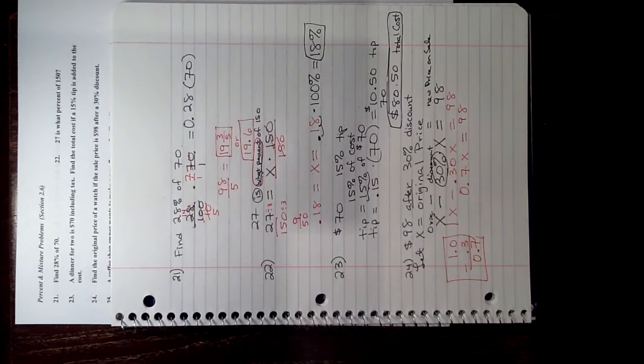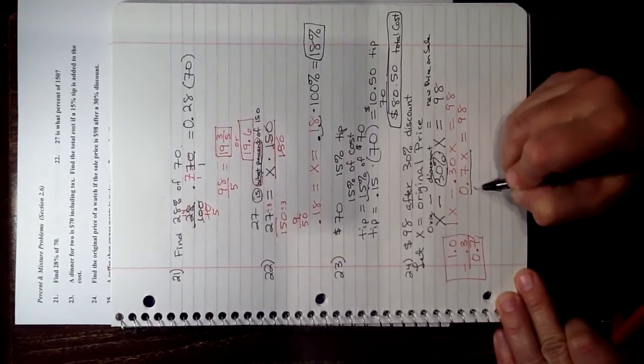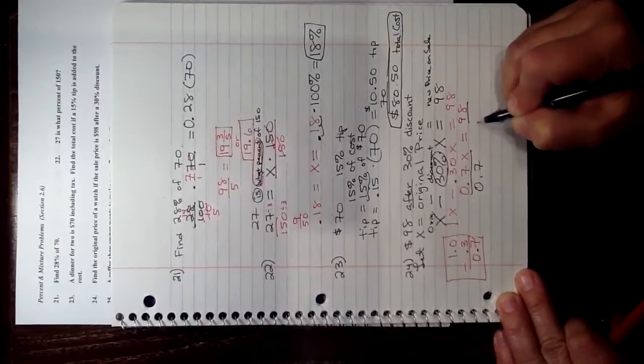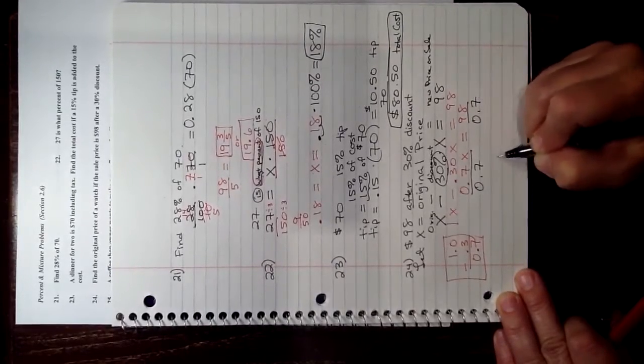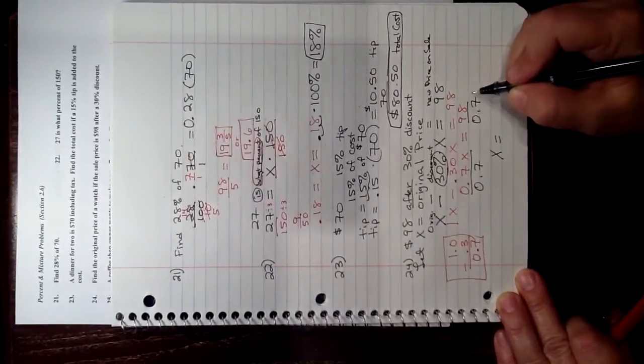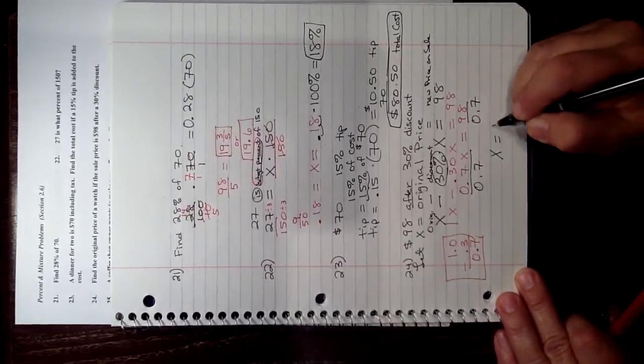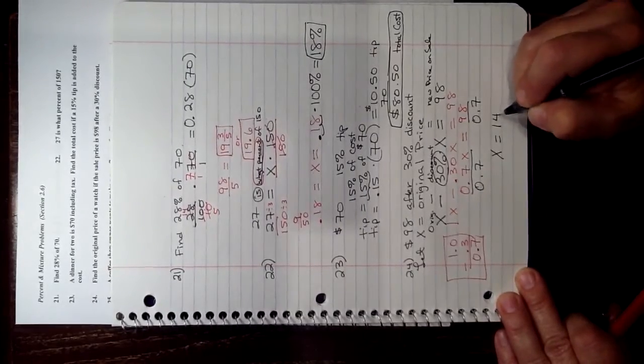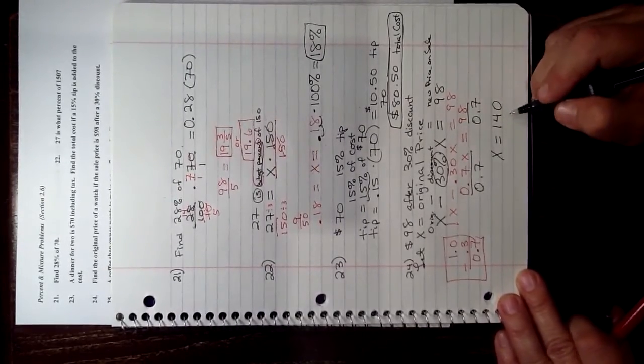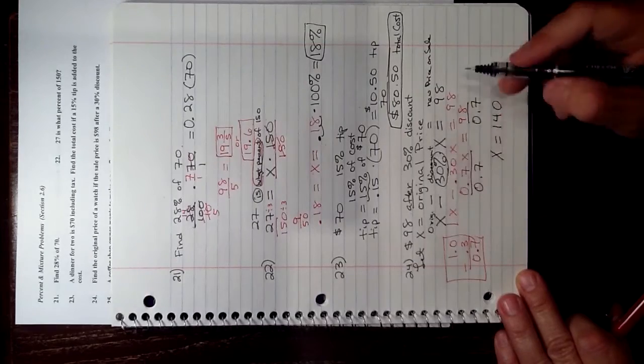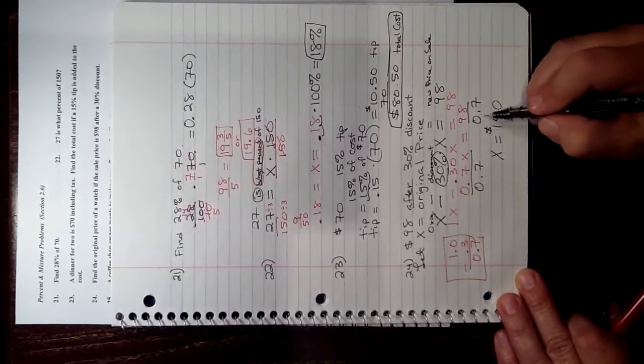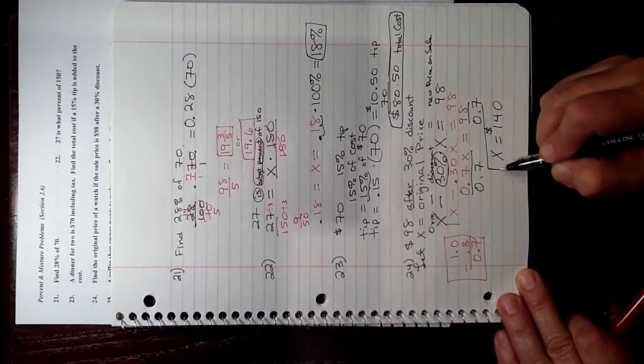To figure out what is X, we have to divide by 0.7, and you get X is, and you could do this on a calculator, and you'll get 140, and X is the original price, so that means that this was $140.